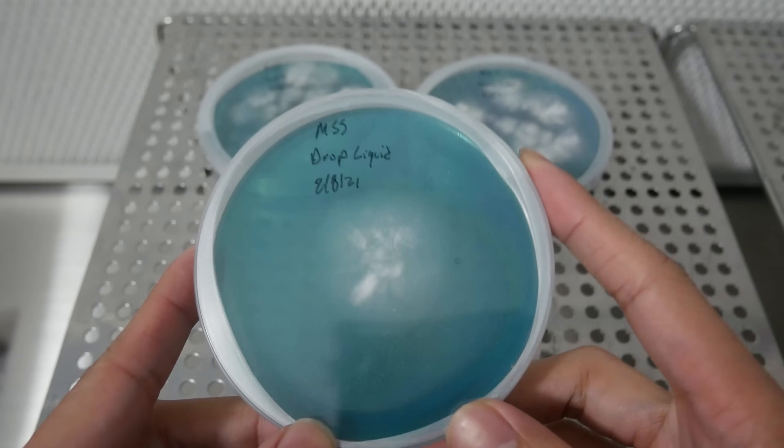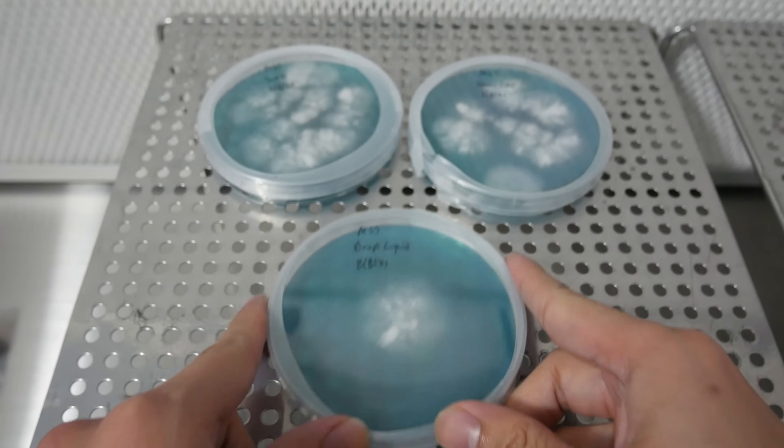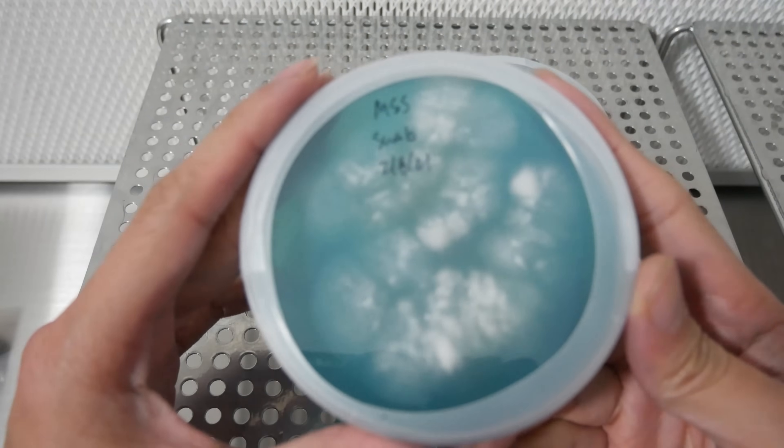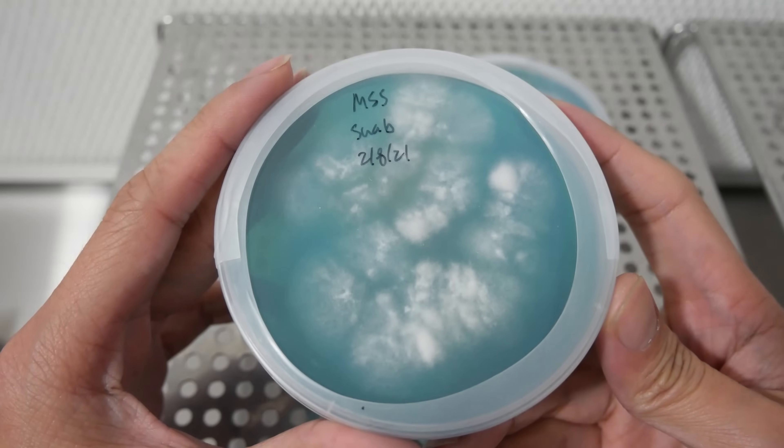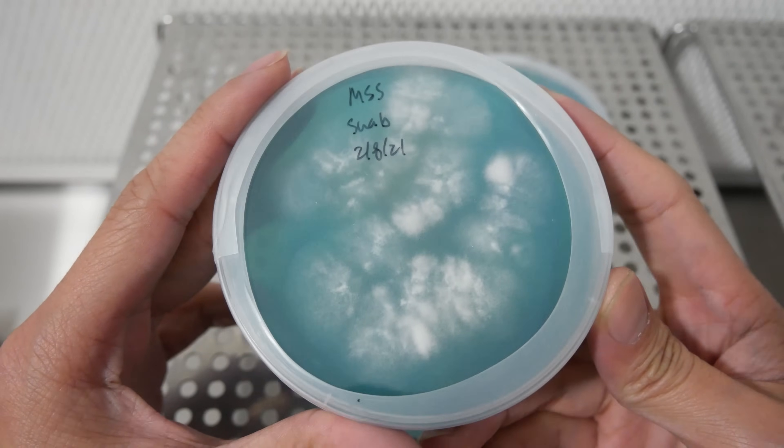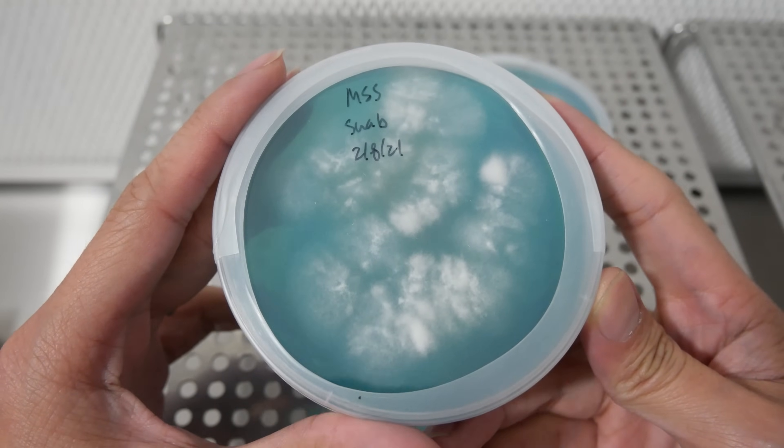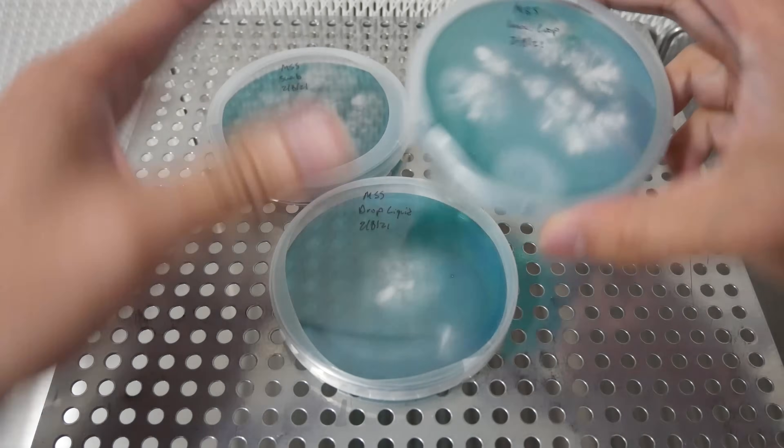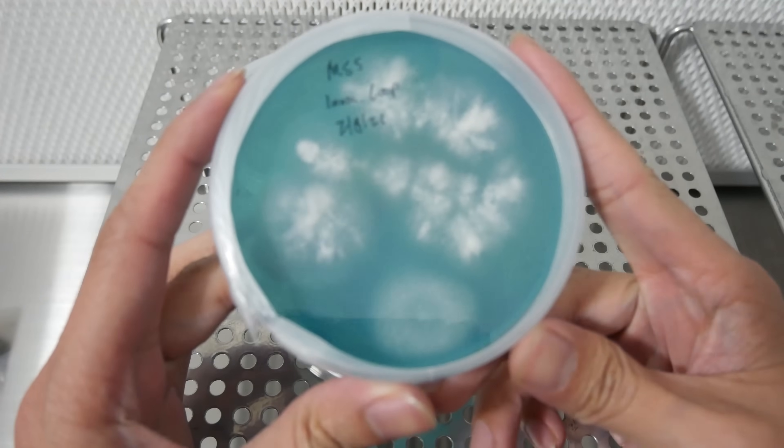Out of the three methods, I really recommend using the swab and loop to inoculate your plates. Here's the swab plate, this one did really well. I might just leave this one out for a couple more days, and if it ends up being clean, I'm gonna put these to grains.